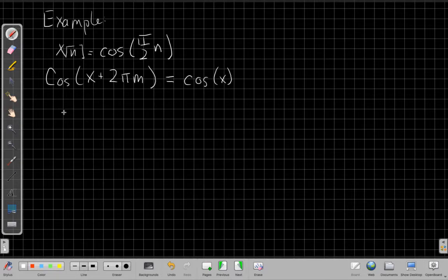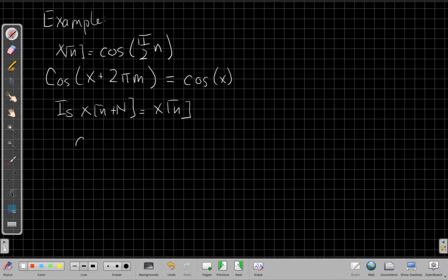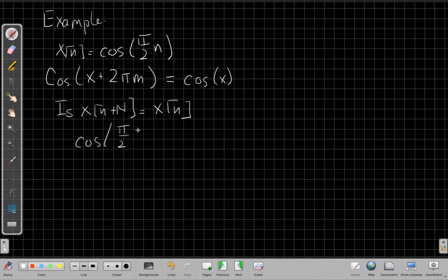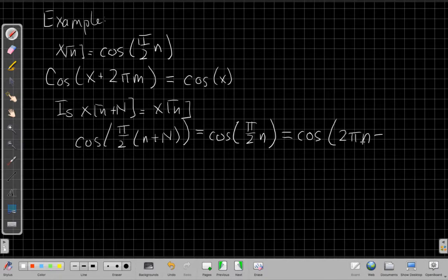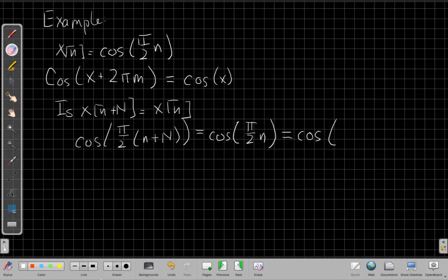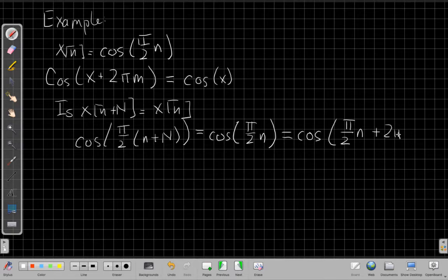And so that says if I want to figure out if this is periodic, we say, well, I need to see if X[n+N] is equal to X[n]. Breaking that down, that would be saying I need cosine of π/2(n+N) to be equal to the original signal, cosine of π/2 n. But we just said the easiest way to do that is if by shifting by that N samples, I've effectively moved by some multiple of 2π. So we say that we know cosine of π/2 n is the same as π/2 n plus some integer multiple of 2π M.